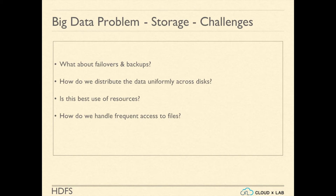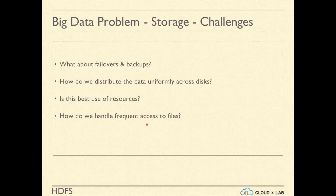How will we handle frequent access to the files? If most users want to access the files stored in one of the hard disks at the same time, file access speed will be really slow and apparently no user will be able to access the file due to congestion. For example, on Independence Day, everybody would like to watch the same movie, and if many users are watching it, they will all be blocking each other accessing from the same disk.